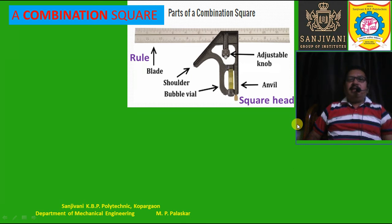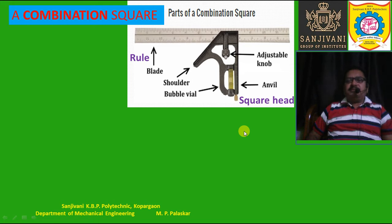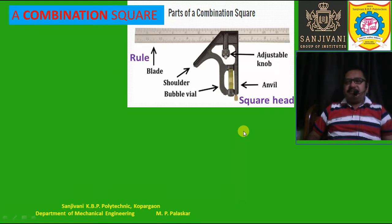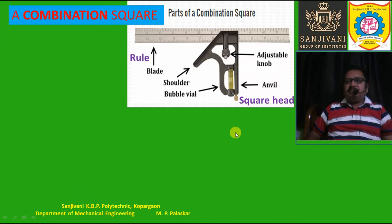Hello, dear student friends, welcome to this session. We are studying the subject Engineering Metrology, and right now we are discussing the various linear and angular measuring devices. We have one special measuring device known as a combination square. Of course, if you add some more components it becomes a combination set.